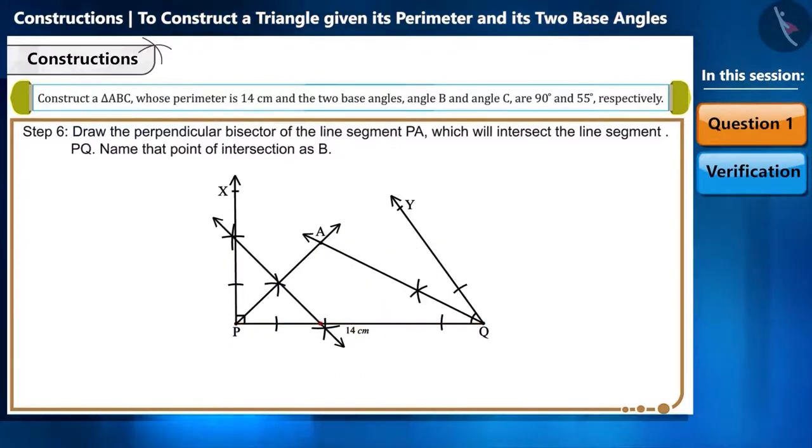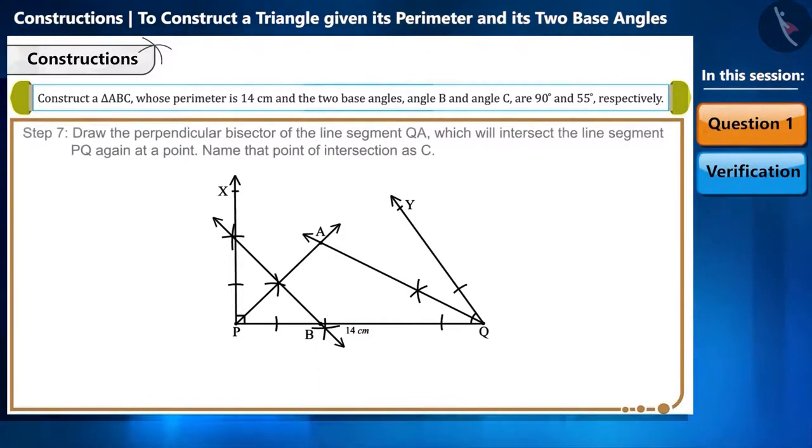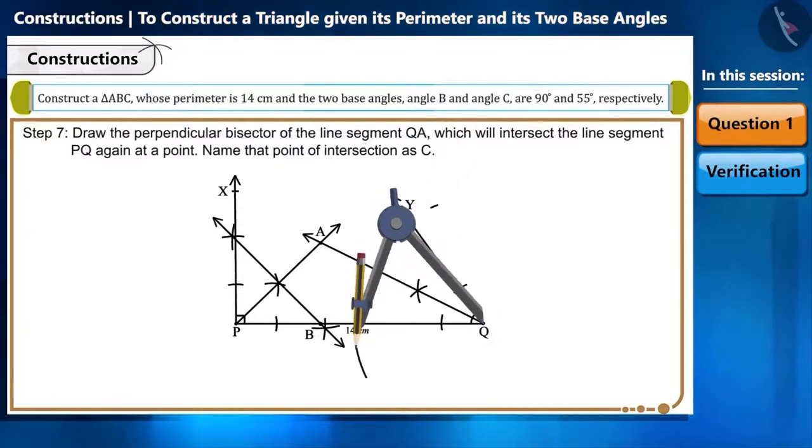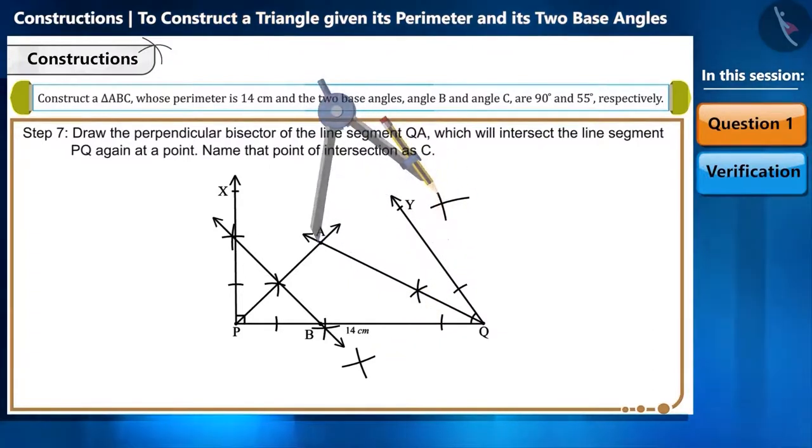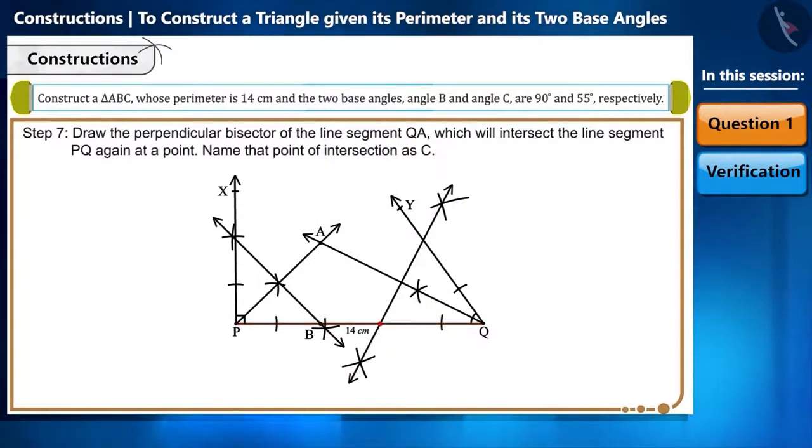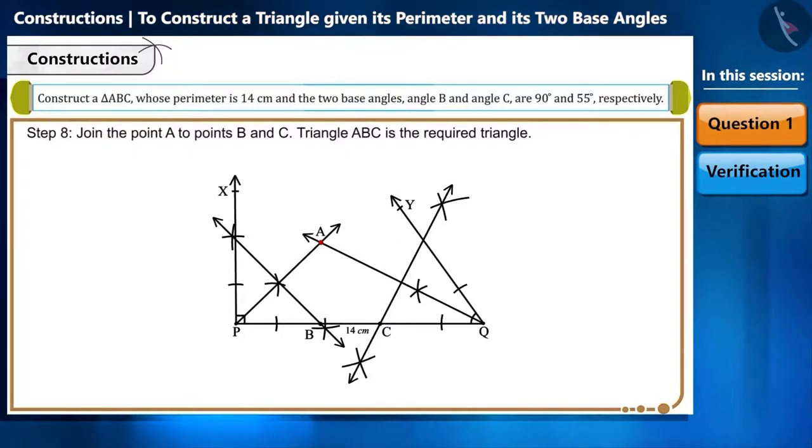This will intersect the line segment PQ at point B. Similarly, draw the perpendicular bisector of QA, which will intersect PQ at point C. Step 8: Join point A to points B and C. Triangle ABC thus obtained is the expected triangle we wanted to construct.